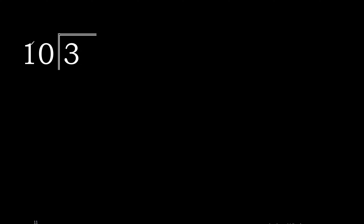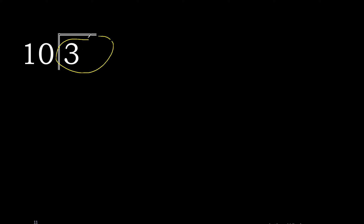3 divided by 10. Since 3 is less than 10, we need to join. But here there is no number, so we complete with 0 and add a decimal point.